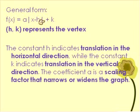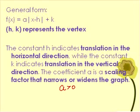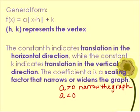If you have a number being added or subtracted outside of the absolute value sign, that means a translation in the vertical direction, either up or down. The a value is a scaling factor, and it narrows or widens the graph. An a value greater than 0 will narrow the graph, and an a value less than 0 will widen the graph.